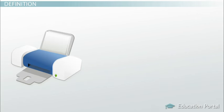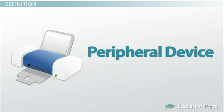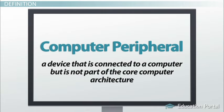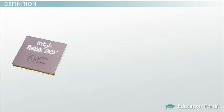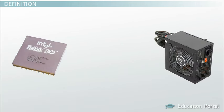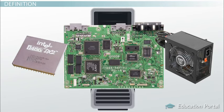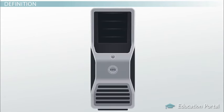A printer is known as a peripheral device. A computer peripheral is a device that is connected to a computer but is not part of the core computer architecture. The core elements of a computer are the central processing unit, power supply, motherboard, and the computer case that contains those three components. Technically speaking, everything else is considered a peripheral device.